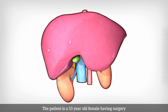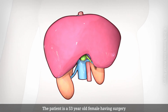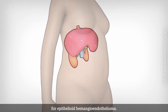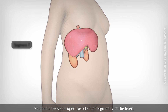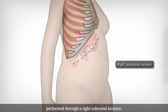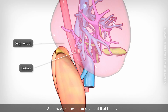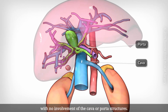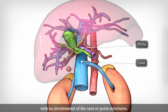The patient is a 53-year-old female having surgery for epithelioid hemangioendothelioma. She had a previous open resection of segment 7 of the liver, performed through a right subcostal incision. A mass was present in segment 6 of the liver, with no involvement of the cava or porta structures.